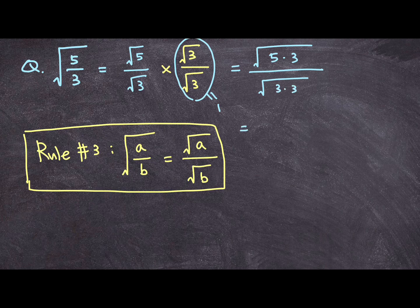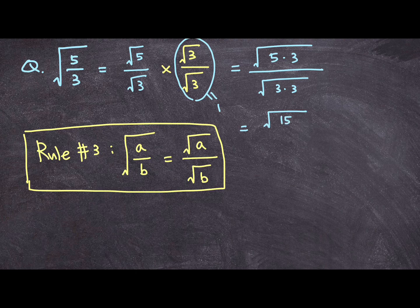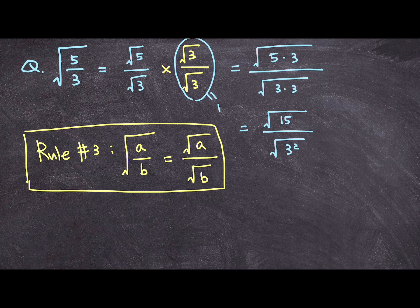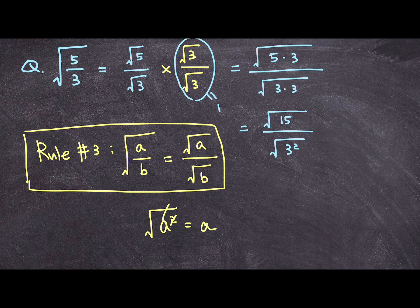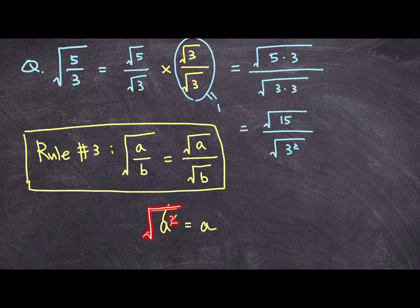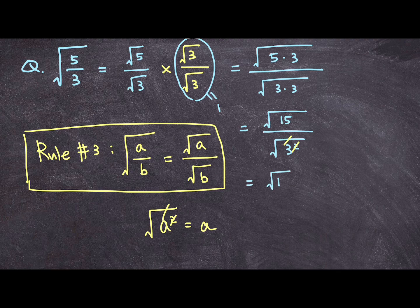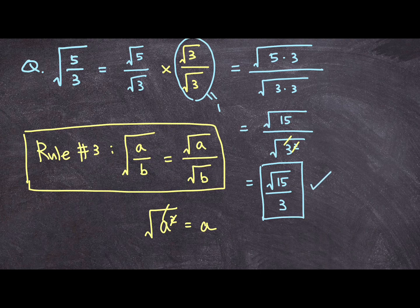Which I can rewrite as square root of 15 over square root of 3 squared, and as I have already told you, square root of a squared is equal to a, because you can cancel the power of 2 and square root together. So I can cancel the square root sign with power of 2, and what I end up with here is square root of 15 over 3, and that'll be our final answer for this second problem of this video.